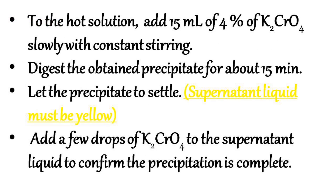To the hot solution, add 15 ml of 4% potassium chromate slowly with constant stirring. Digest the obtained precipitate for about 15 minutes.